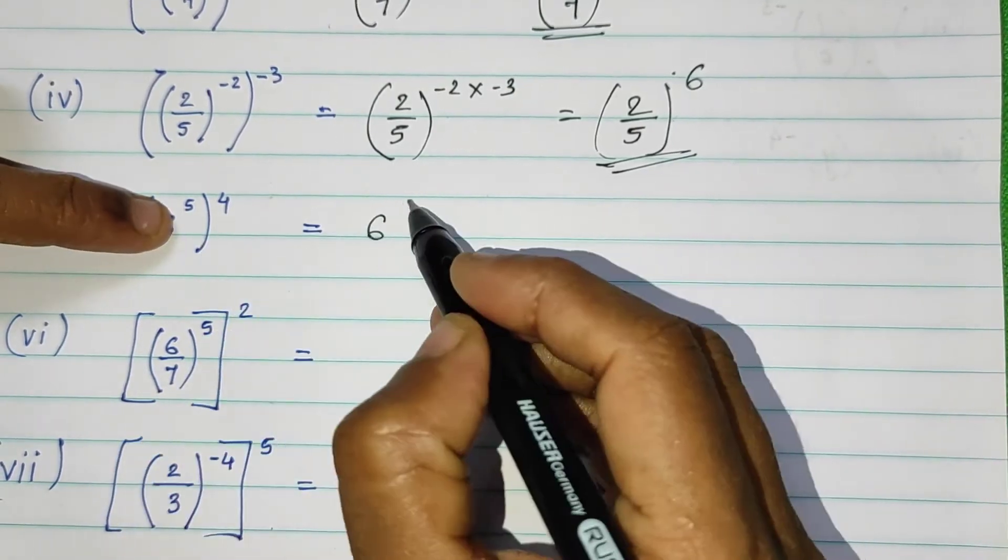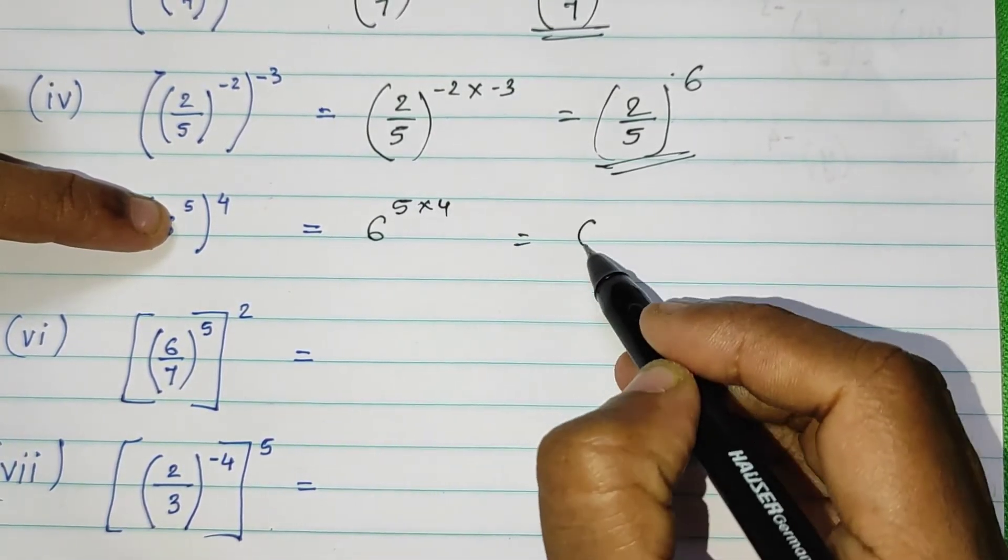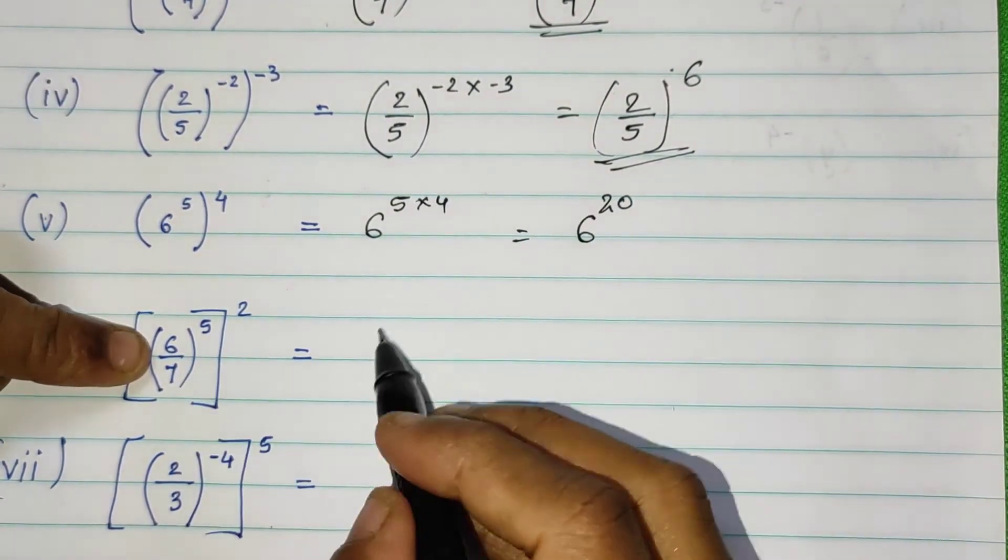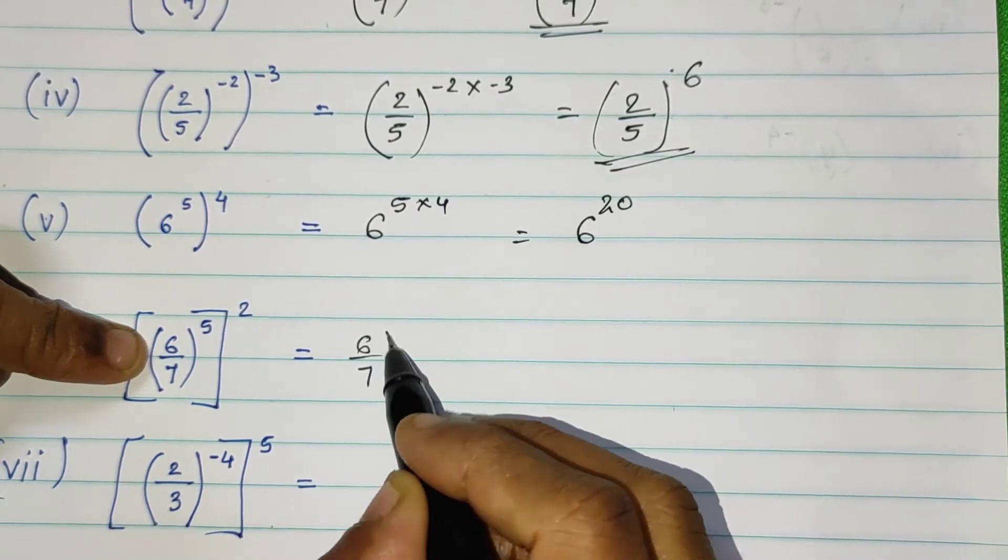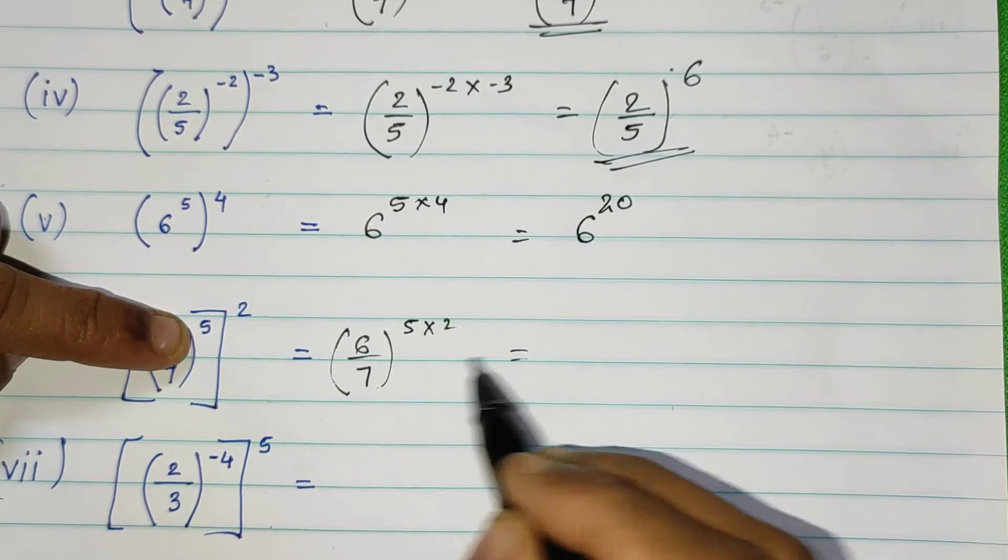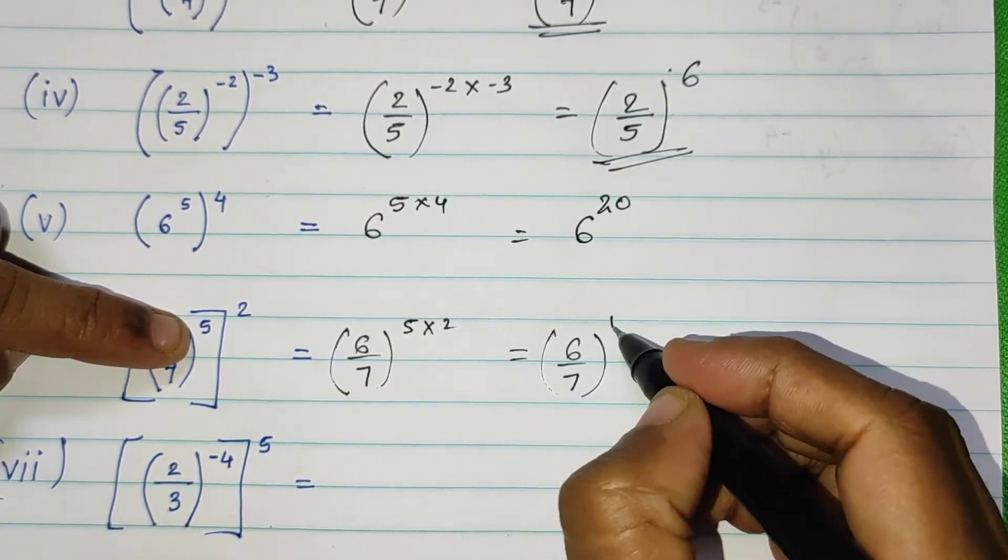6 raised to 5 into 4, so 6 times 5 times 4 is 20. Here, 6 upon 7 raised to 5 into 2, so 6 upon 7, 5 times 2 is 10.